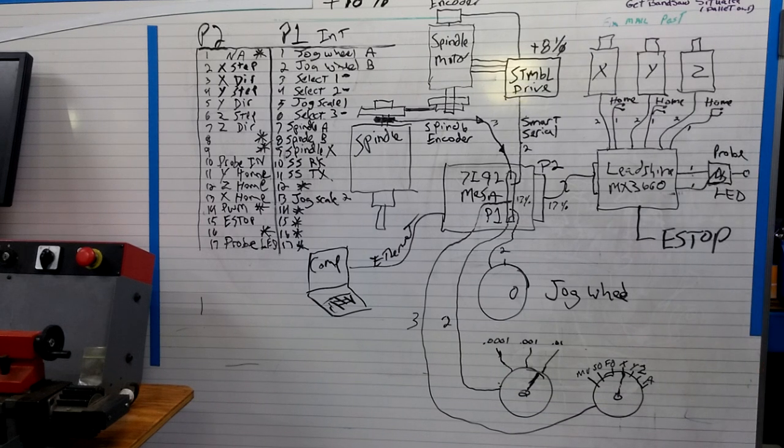So how I have this set up, this has kind of been a journey. I have this, this came with a Leadshine MX3660 which is a three axis stepper drive. So P2, this is P2, it's plugged into the Leadshine. So it does the steppers because it's a stepper drive. I've got the home switches hooked into it.